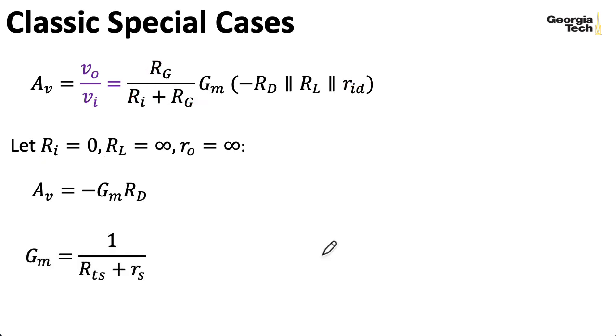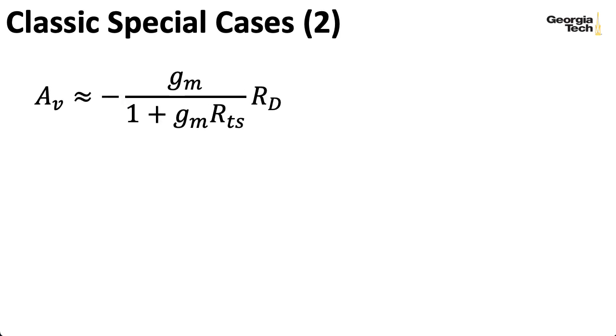Big GM is 1 over RTS plus little rs. I can rewrite little rs as 1 over little gm, and let me multiply the numerator and the denominator by little gm to write big GM like this. So in the case where the source is completely bypassed, we set RTS equal to zero, and our gain is just the intrinsic gain of the JFET times our drain resistor.